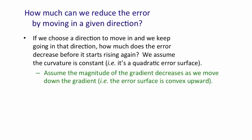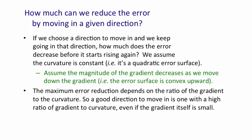We're going to assume that the magnitude of the gradient decreases as we move down the gradient. That amounts to assuming that the error surface is concave upward like a bowl. The maximum reduction that we can get in the error by going in a particular direction depends on the ratio of the gradient to the curvature. So we want to move in directions that have a good ratio. Even if the gradient is quite small, we want the curvature to be even smaller.